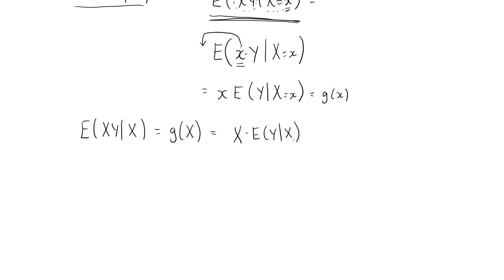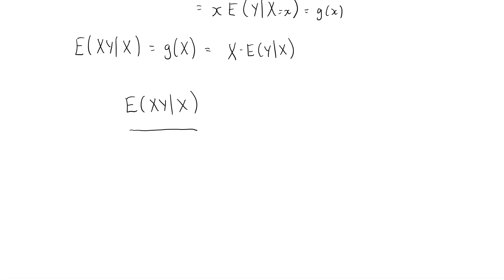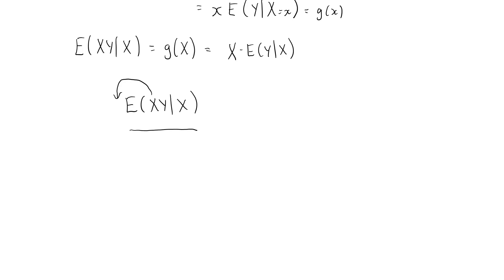The important point is that when computing the conditional expectation of x·y given x, you simply think of x as a constant, and that allows you to move this random variable outside the expectation operator. Unconditionally, we are absolutely not allowed to move random variables outside the expectation operator. But conditionally, we can always move the random variables we are conditioning on outside the expectation operator, because we can treat them as constants.